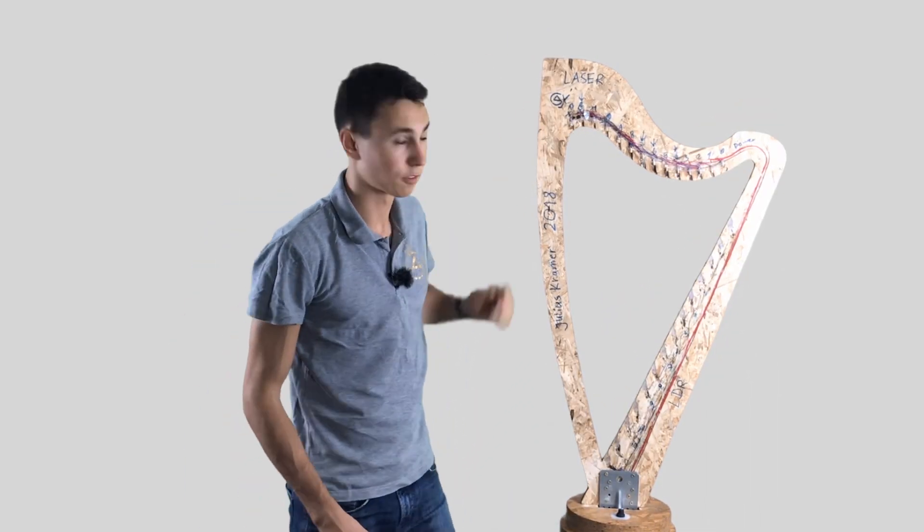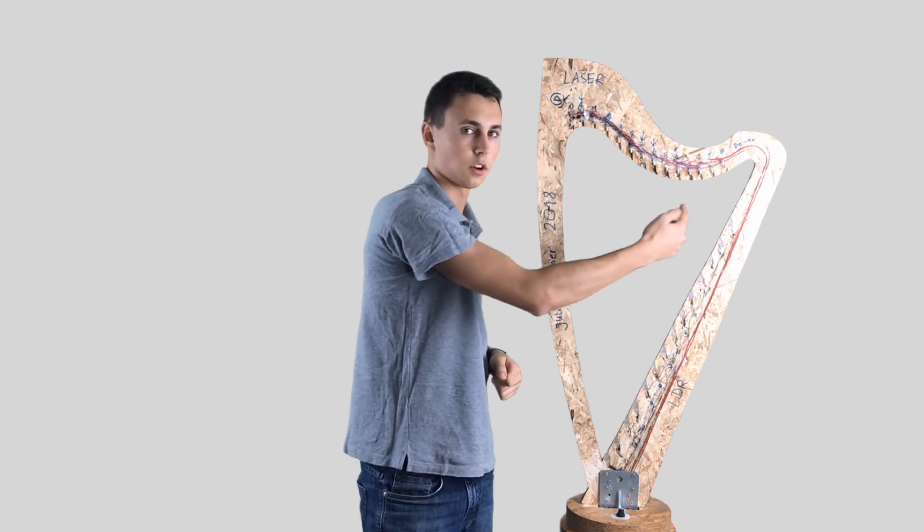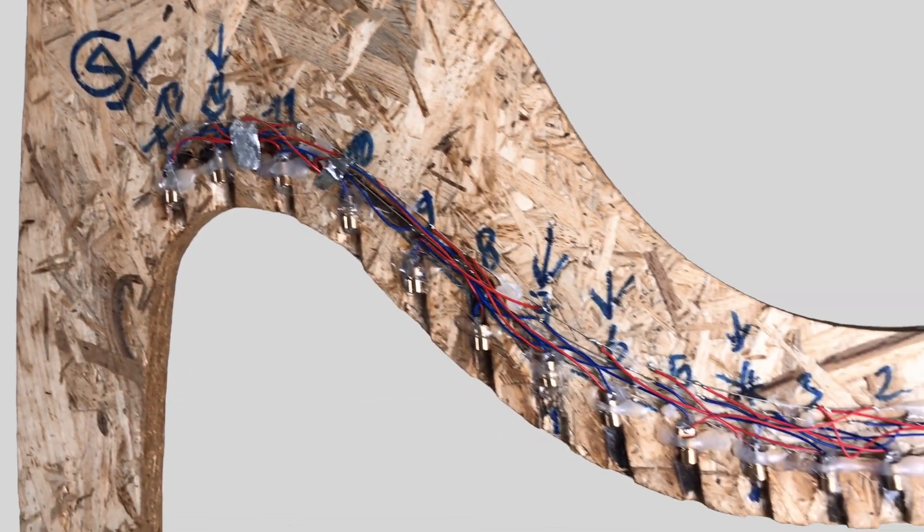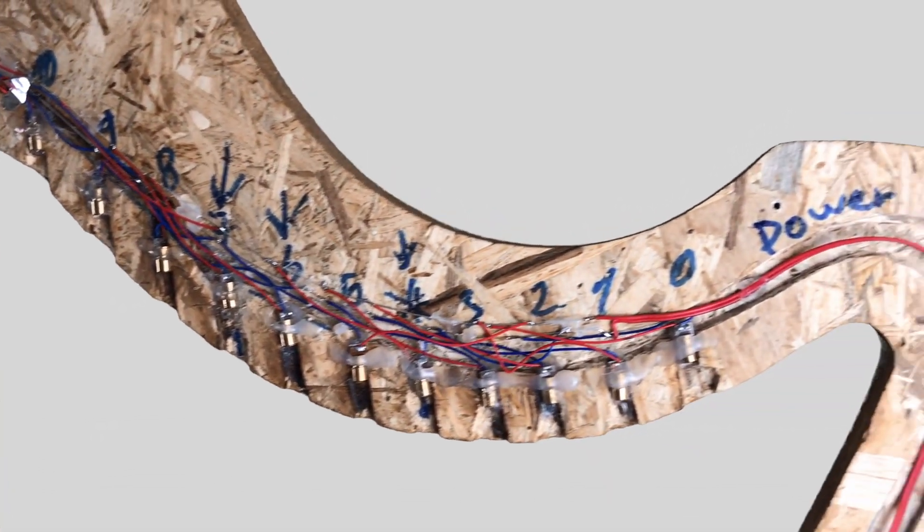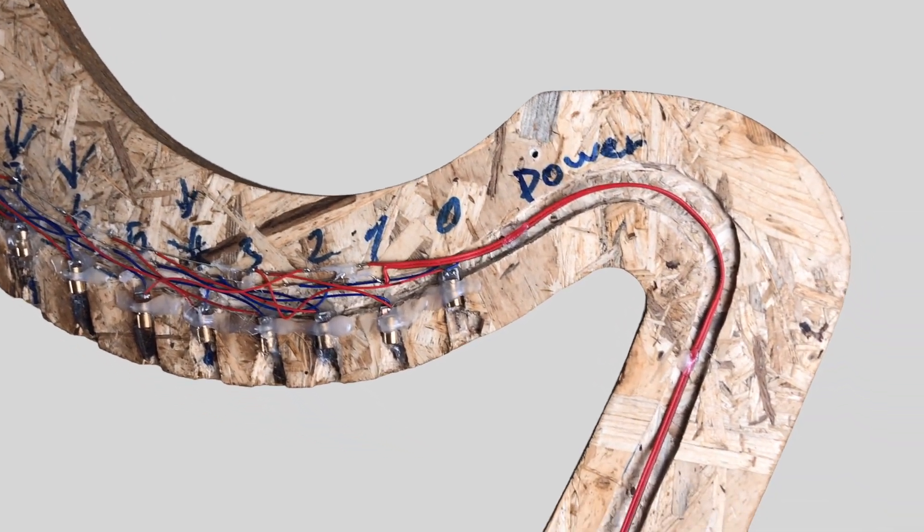This is what we got inside of here. Right here at the top we've got the laser diodes, these are the ones which make the light. And right here we've got the photo resistors, those photocells I told you about.